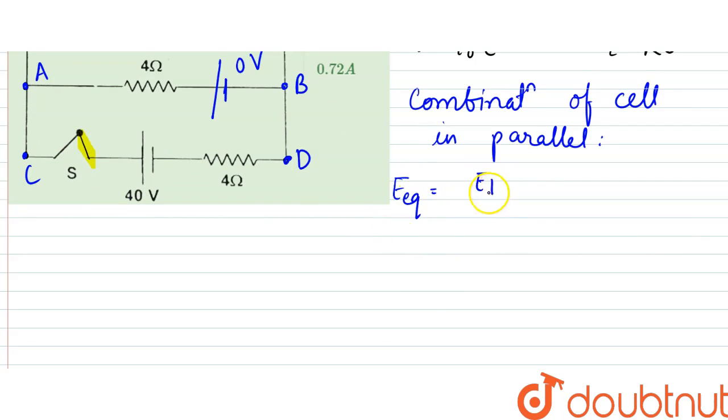E equivalent is equal to E1 by R1 plus E2 by R2 divided by 1 by R1 plus 1 by R2. That is R equivalent.